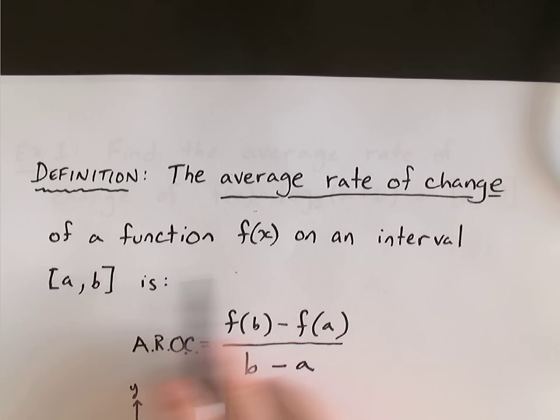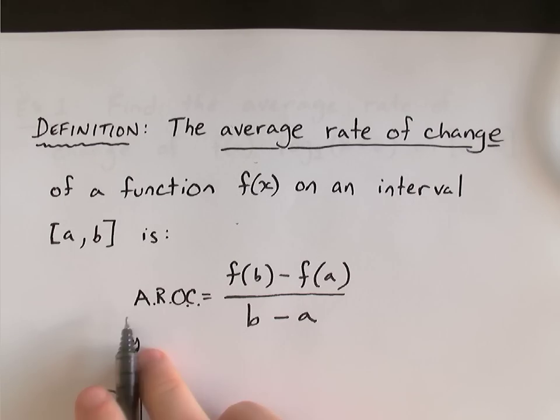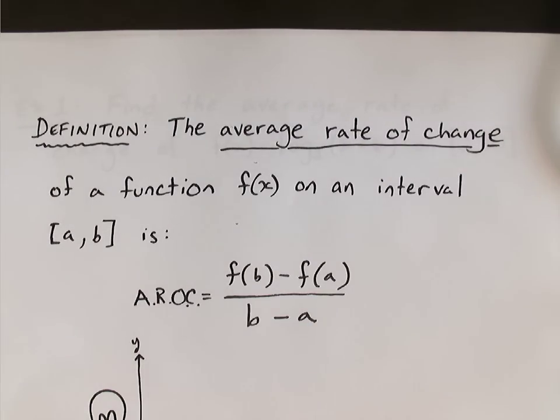The average rate of change of a function f(x) on an interval [a,b] is, we'll call it AROC, average rate of change. All it is is f(b) minus f(a) over b minus a. And if that sounds familiar, it should, because it's nothing but the slope of the secant line.